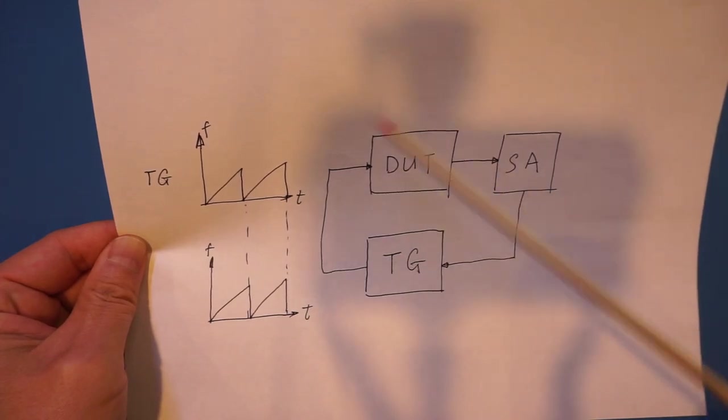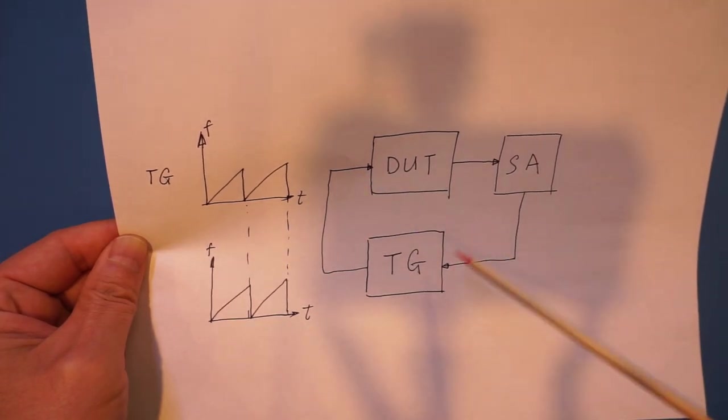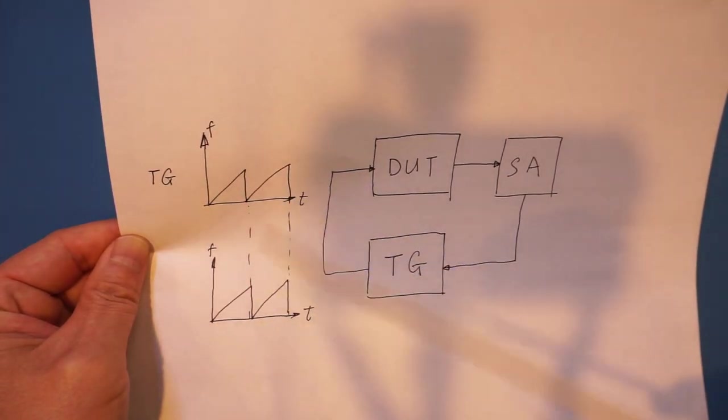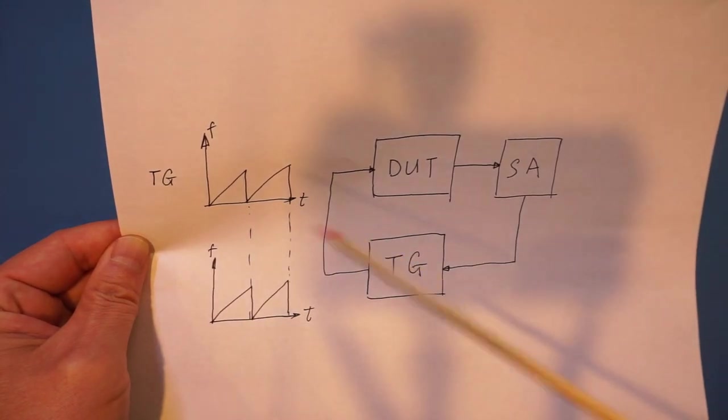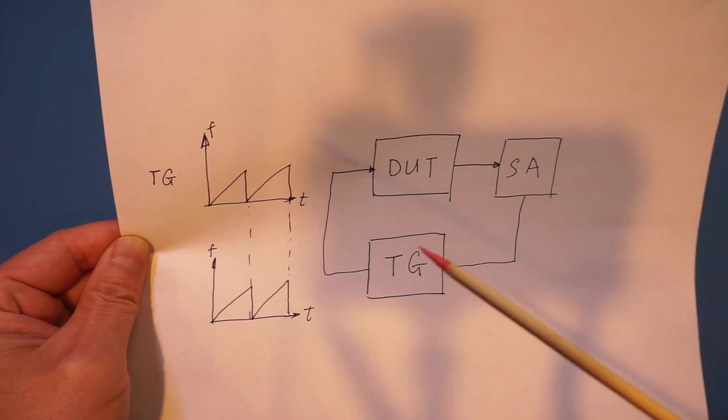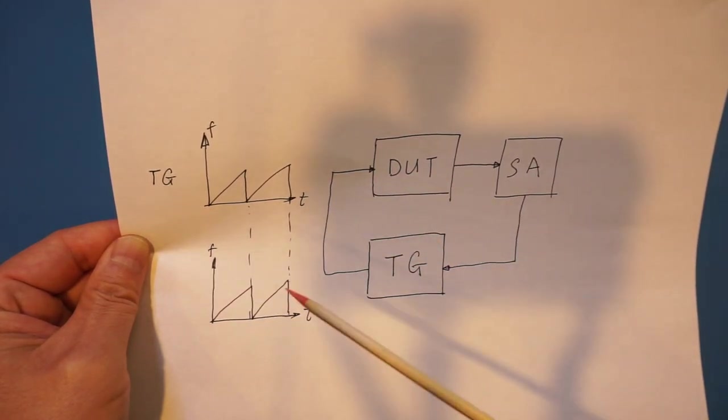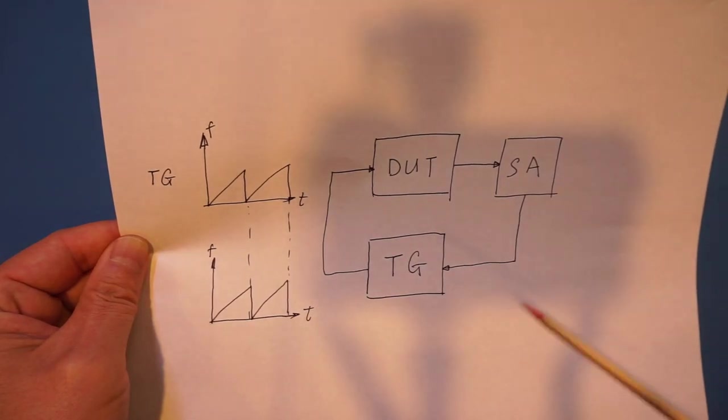You can see here, because the input into the device under test is essentially from the tracking generator, which tracks the SA's sweeping signal. So therefore these two signals are now in sync. So at any given moment, the Spectrum Analyzer sees the same frequency input as what it is currently sweeping at. So it only takes one sweep to cover the entire frequency range of interest.